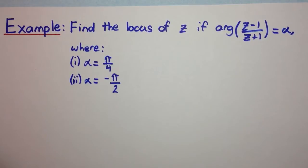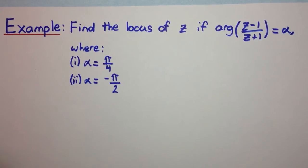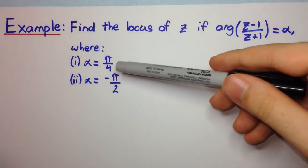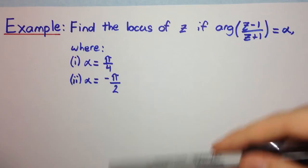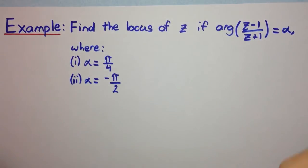In this example, find the locus of z if the argument of z minus 1 over z plus 1 equals alpha, where alpha is pi on 4 and minus pi on 2. So we have two different cases we want to look at.